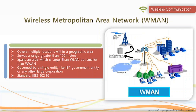Wireless metropolitan area network covers multiple locations within a geographic area and serves a range greater than 100 meters. This wireless network is larger than a wireless local area network but smaller than a wireless wide area network. It is governed by a single entity like an ISP, government entity, or large corporation, and is based on IEEE 802.16 standard.